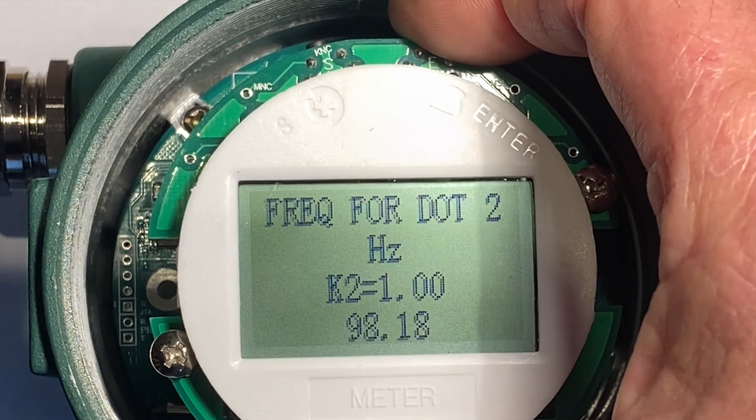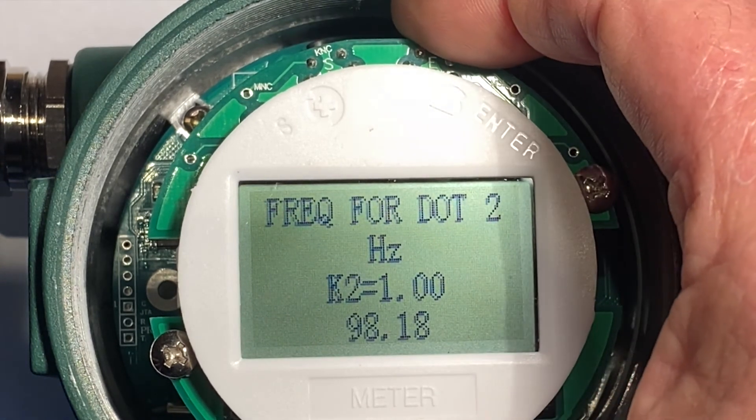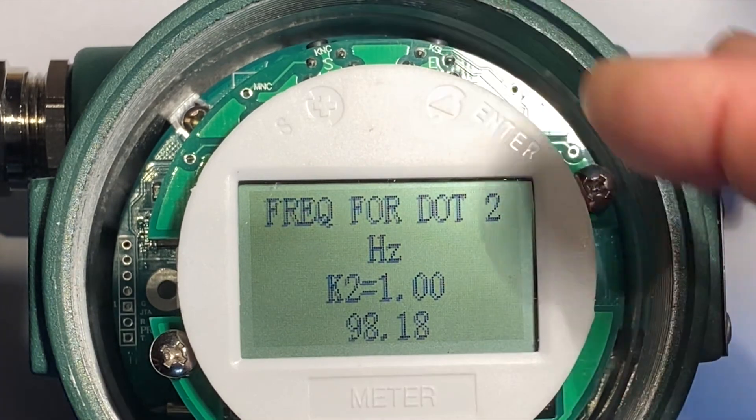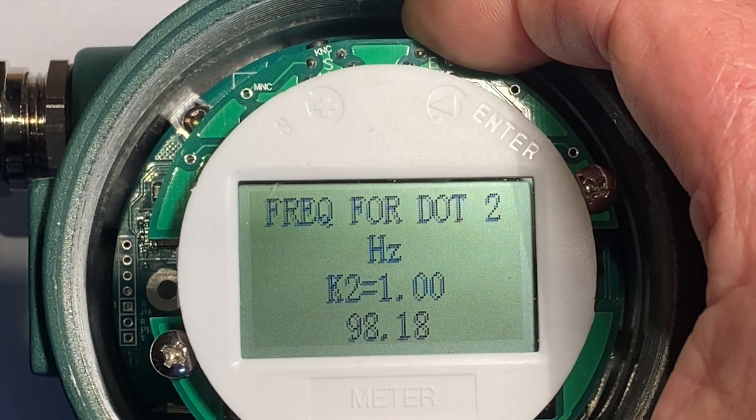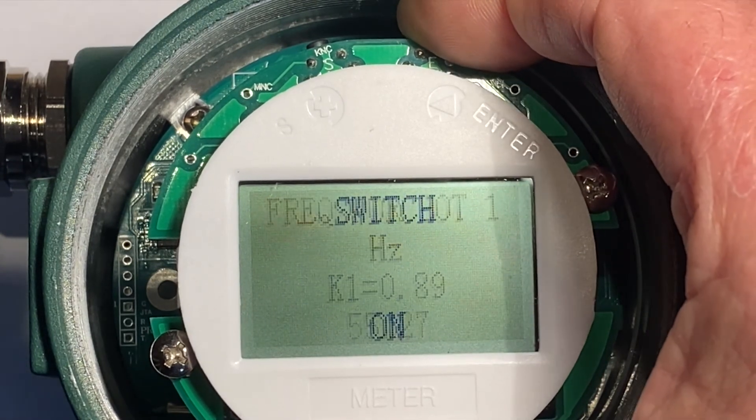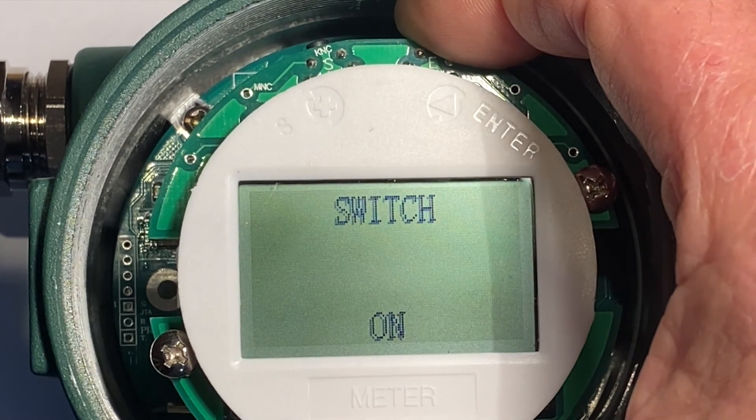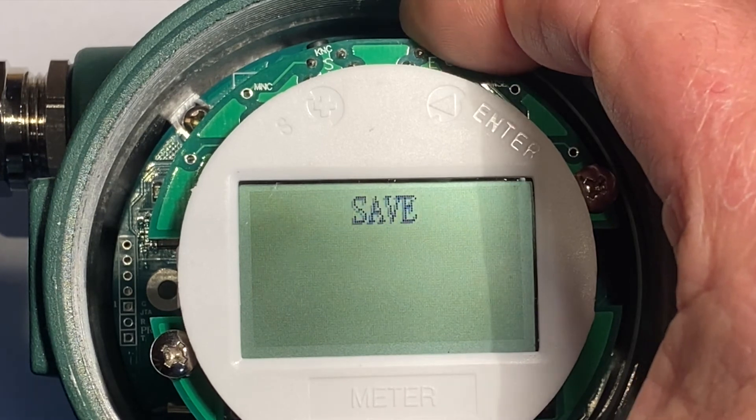So now we have frequency for DOT 1 and 2. You do 3, 4, and 5 just the same. Once you're done, I'm going to now show you how to save. Switches on. That means we're going to use this function. Save.